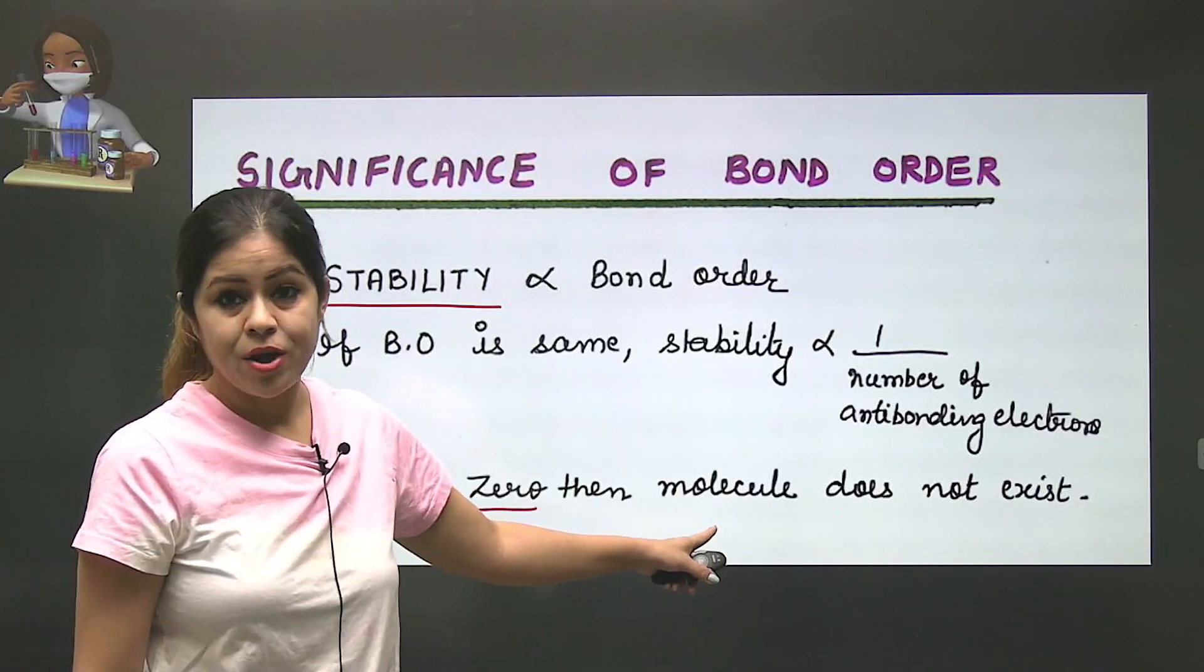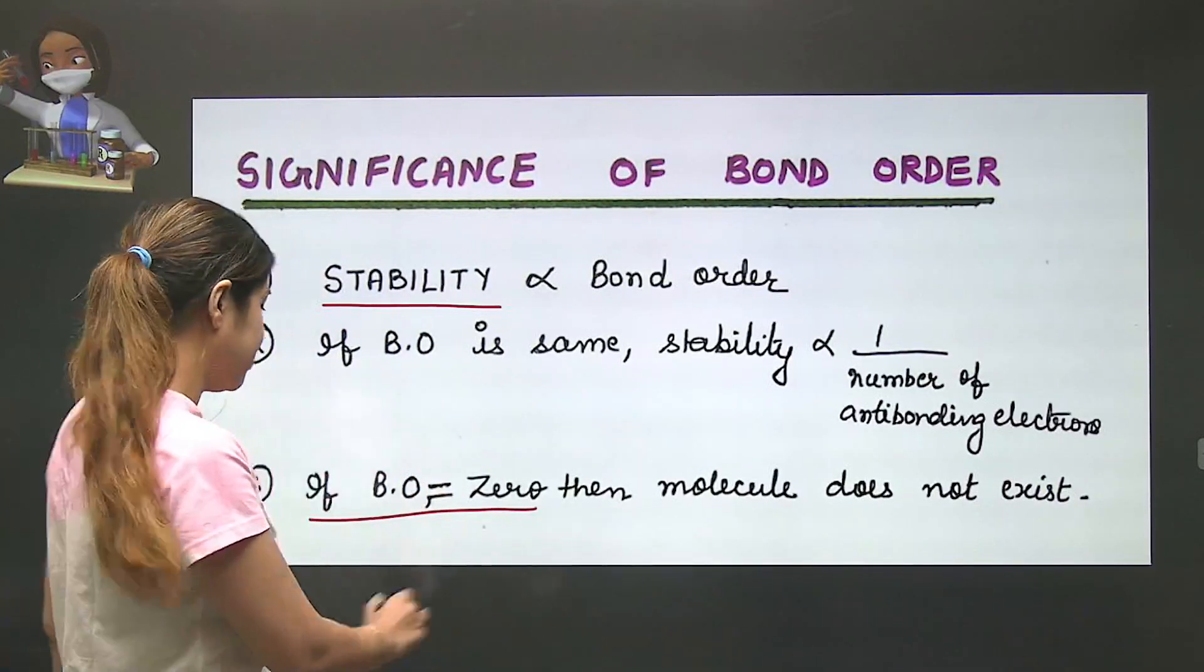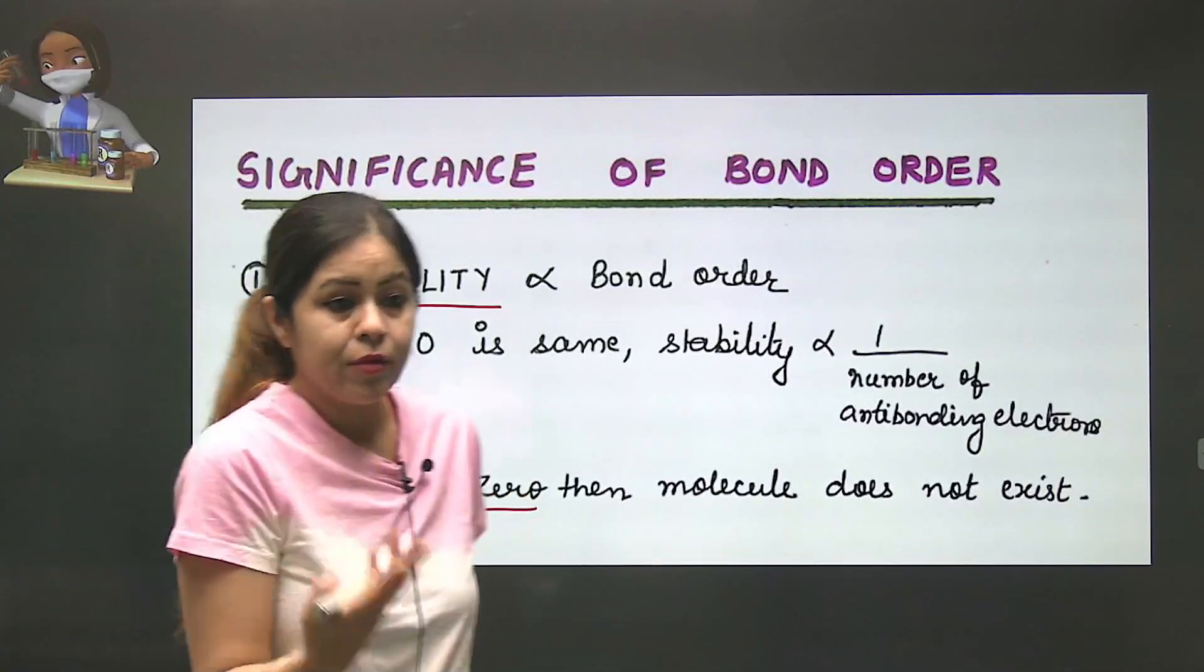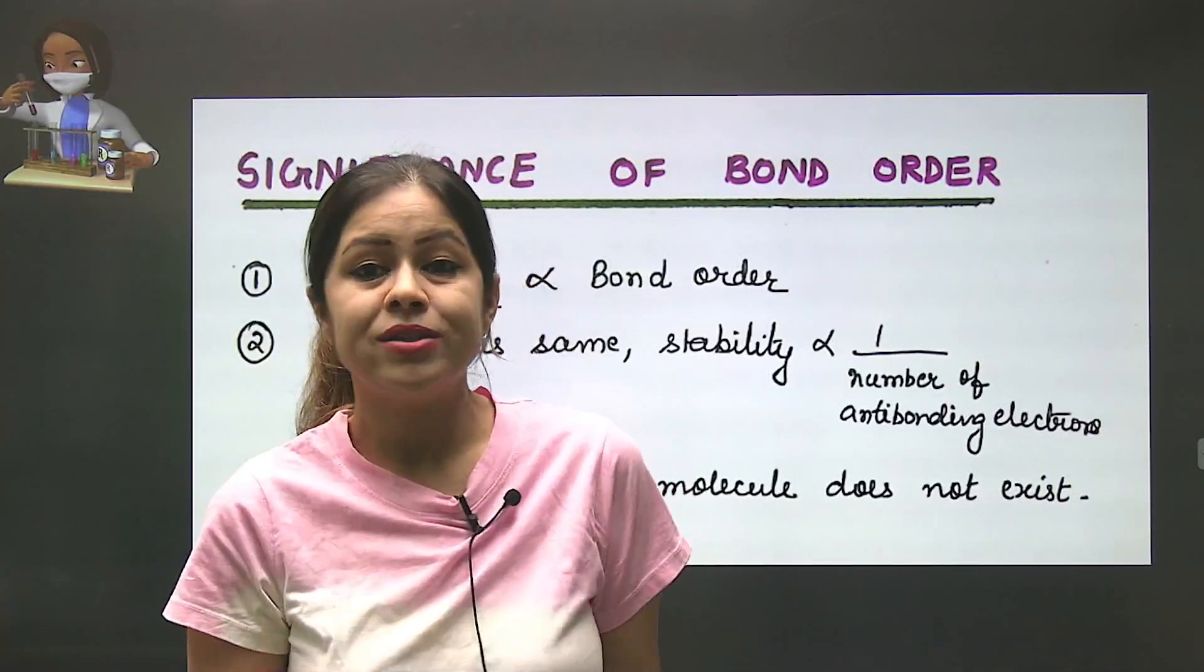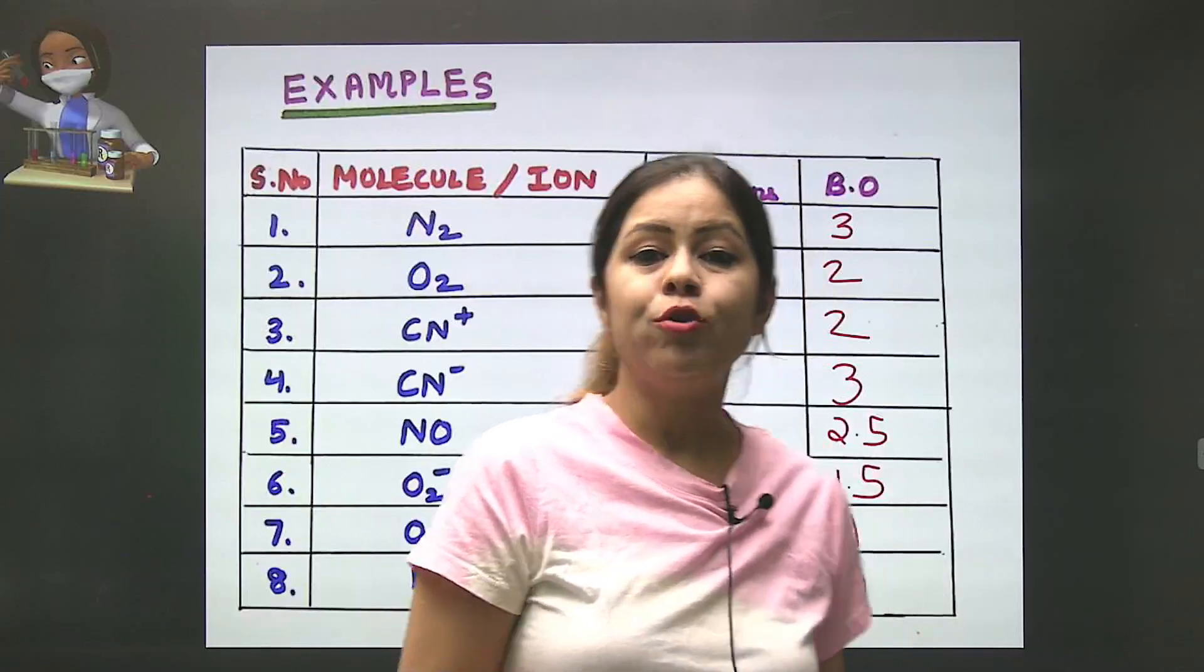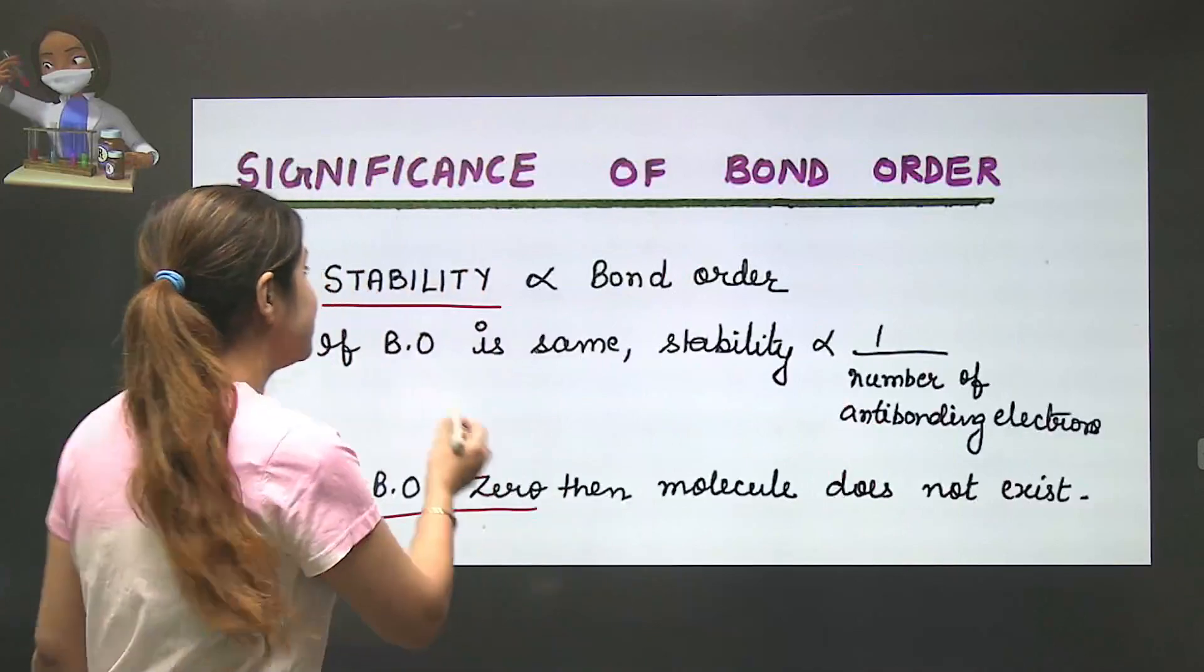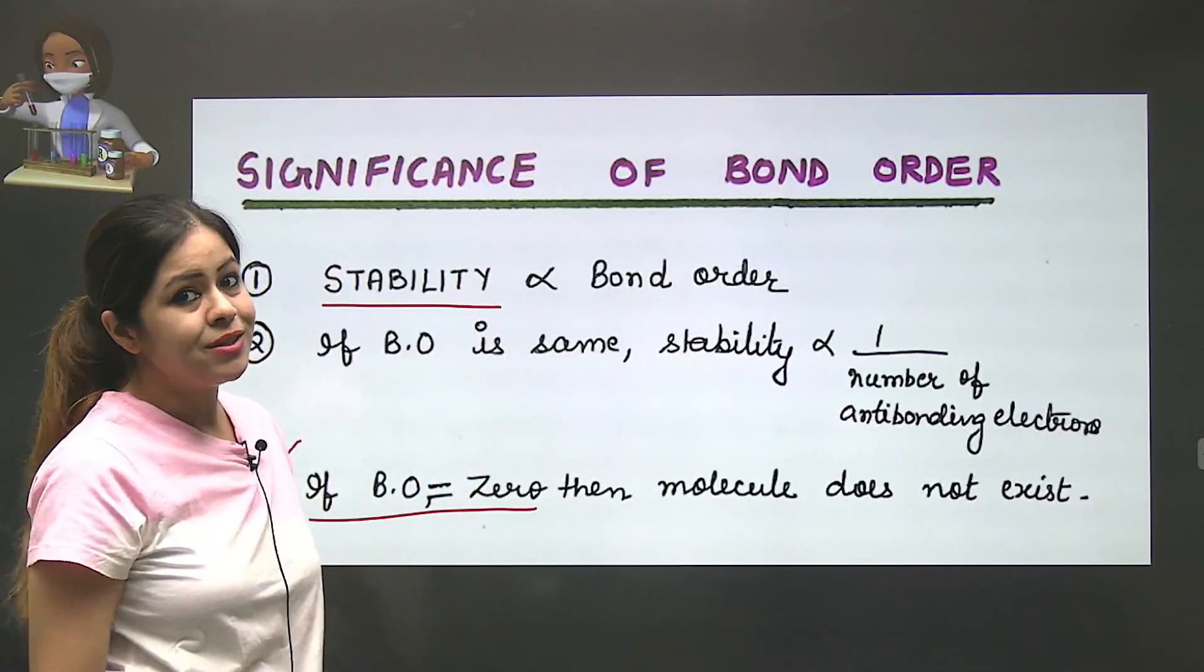If bond order is zero, this question comes in 11th class. JEE/NEET doesn't have this, but it comes in 11th class. If bond order is zero, the molecule doesn't exist. Why? Because Be2 has 8 electrons, bond order is zero, and with zero bond order there is zero stability, so it cannot exist.